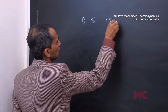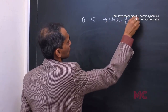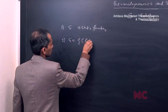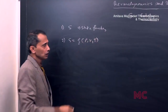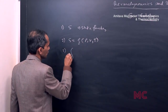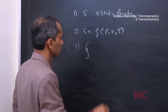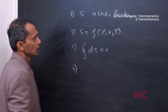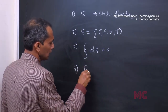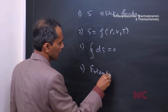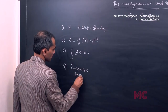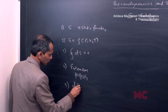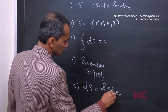Entropy is a state function, and as a state function it can be a function of pressure, volume, and temperature. For a cyclic process, the integral of dS should be equal to zero. It is also an extensive property.